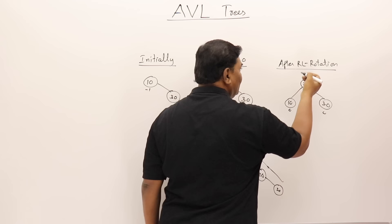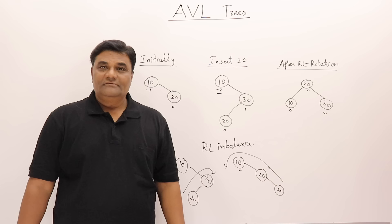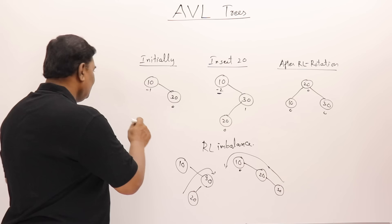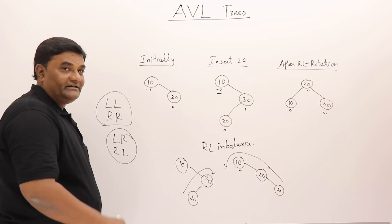In total there are four rotations. LL and RR are similar — these are single rotations. LR and RL are similar — these are double rotations.